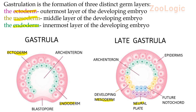The neural plate will form the nervous system of the embryo, and the notochord will eventually develop into the vertebral column in vertebrates. The archenteron will form the digestive cavity. By the end of gastrulation, the germ layers are formed, and at this stage the formation of organ systems begins — that is, organogenesis starts after gastrulation.